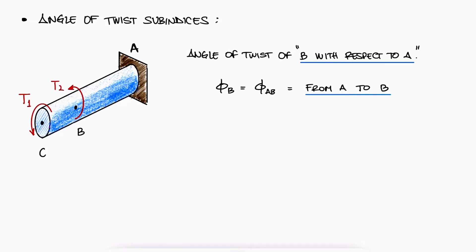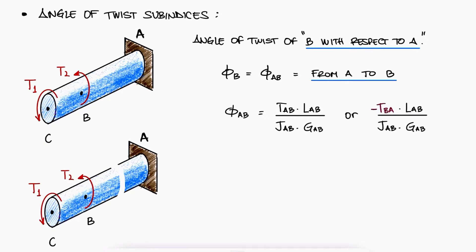To calculate that, we would need the internal torque between A and B, but because we want B with respect to A, we either need TAB or no TBA and add a negative value. To find this, we would need to perform a cut between A and B.